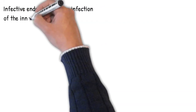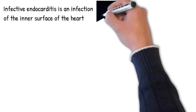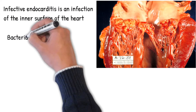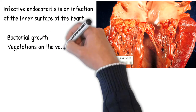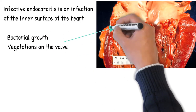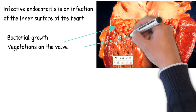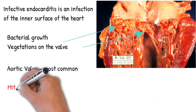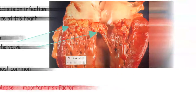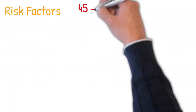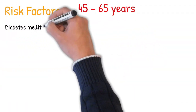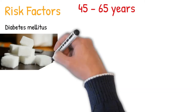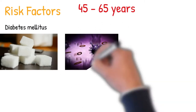Infective endocarditis is an infection of the inner surface of the heart, most commonly affecting left heart valves. The aortic valve is the most commonly affected valve. Mitral valve prolapse is associated with endocarditis in 20-30% of cases. It most frequently occurs in adults between 45 and 65 years of age.